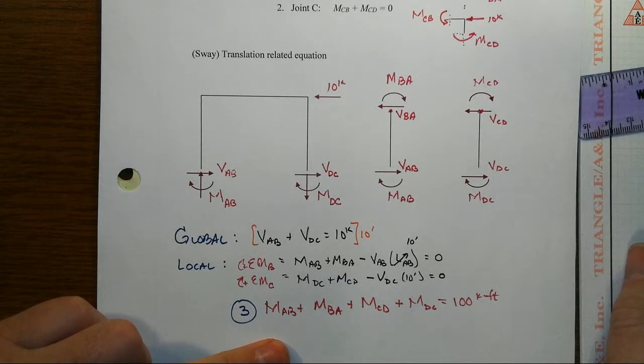That involves only the member moments from which we can now substitute in our slope deflection equations that will have our unknown displacements: theta B, theta C, and the chord rotation term. And that's our next couple of steps to go solve for those and back substitute.